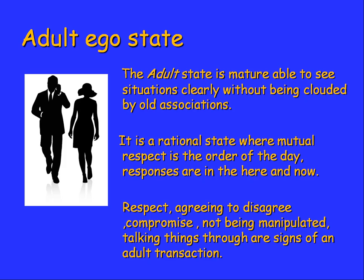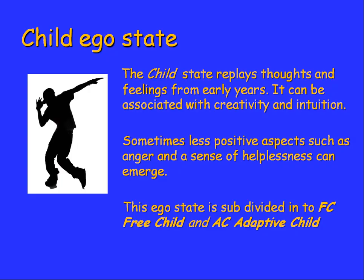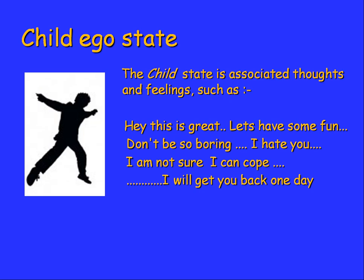The child ego state replays thoughts and feelings from early years. It can be associated with creativity and intuition, but sometimes less positive aspects such as anger and a sense of helplessness can emerge. It's subdivided into free child and adaptive child. If you're in the child ego state, you're replaying thoughts and feelings from childhood — things like 'hey, this is great, let's have some fun', 'I hate you', 'I'm not sure if I can cope', or 'I'll get you back one day.'